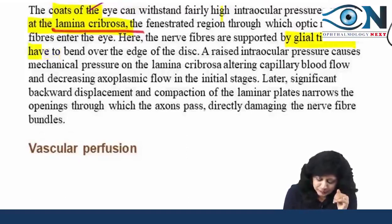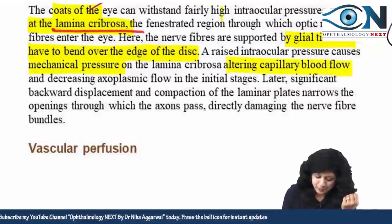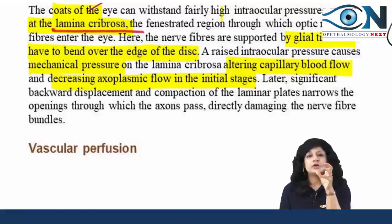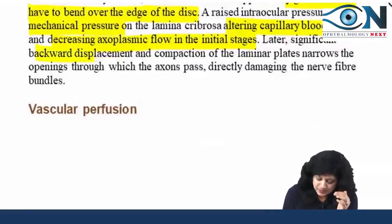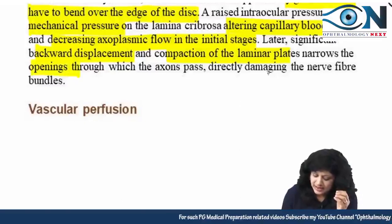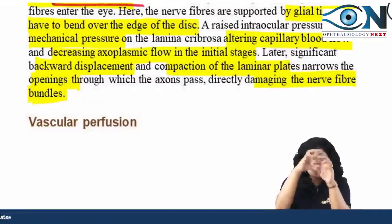At the lamina cribrosa, the nerve fibers supported by glial tissue have to bend over the edge of the disc. Raised intraocular pressure puts mechanical pressure on this area, altering capillary blood flow and decreasing axoplasmic flow in the initial stages. This causes axostasis. Significant backward displacement and compaction of the lamina plates then narrow the openings through which nerve fibers pass, damaging the nerve fiber bundles.